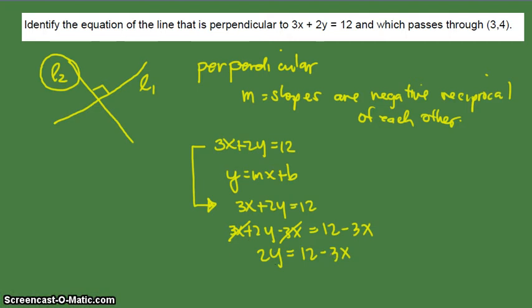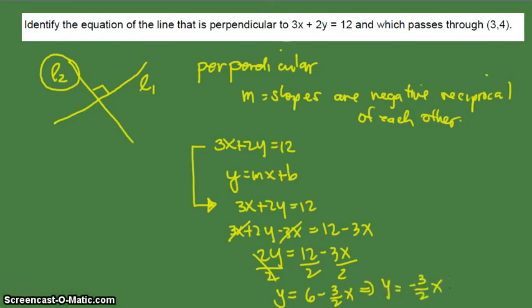Now we have 2y, but what we need is just y. So we divide everything by 2. If we do that, we have y equals 6 minus 3 over 2x, which is the same as y equals negative 3/2 x plus 6. Since we want to transform it into y equals mx plus b, it's very clear that the slope is equal to negative 3 over 2.